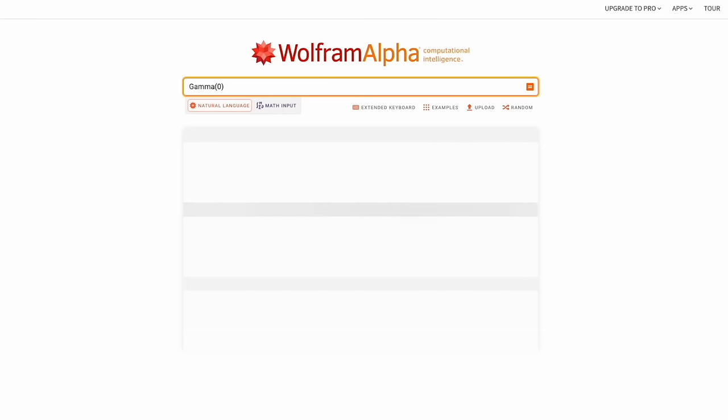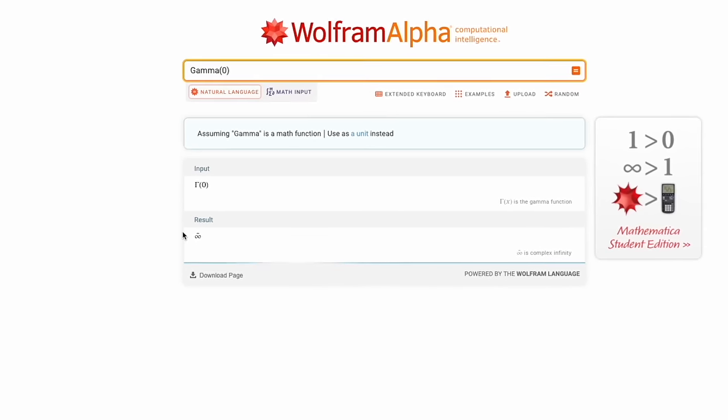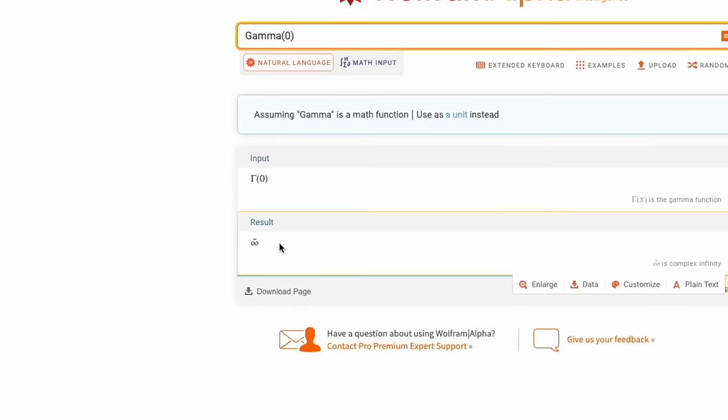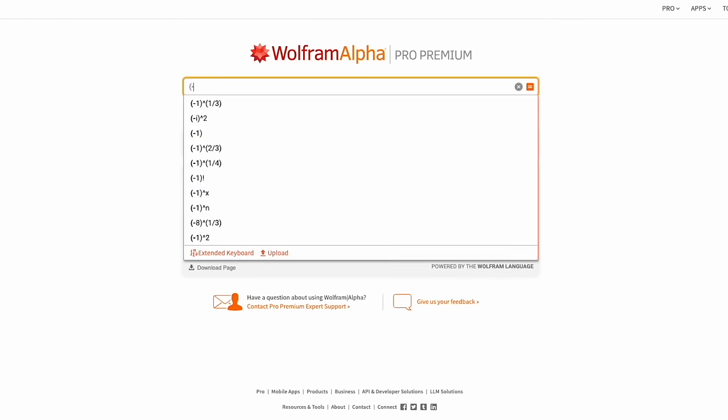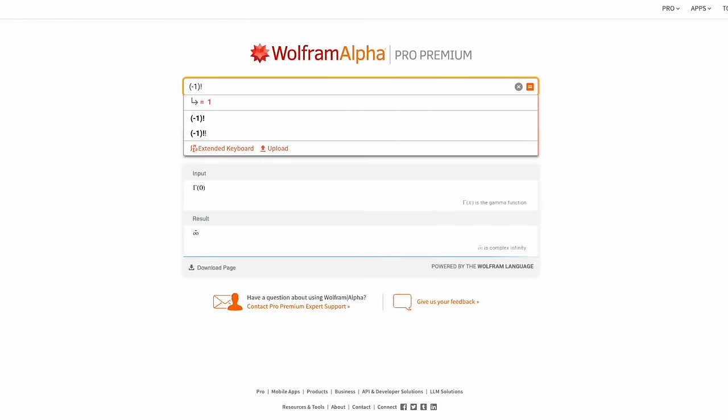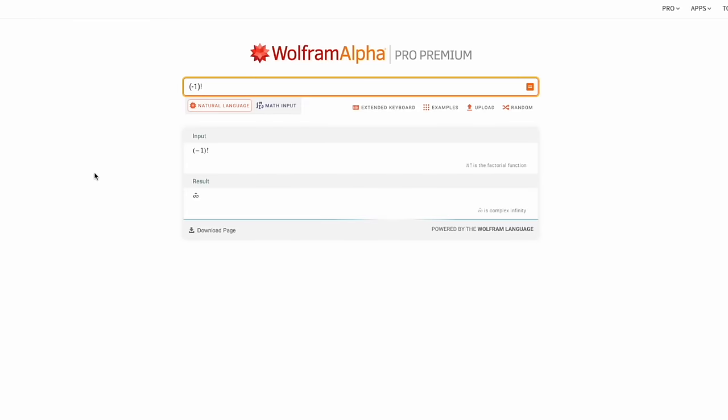If you type gamma of 0 into Wolfram Alpha, what should be negative 1 factorial, you'll get infinity with a tilde symbol as the output. And it's the same if you input negative 1 factorial itself.